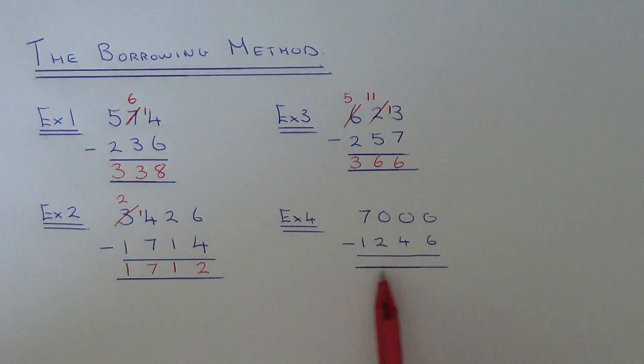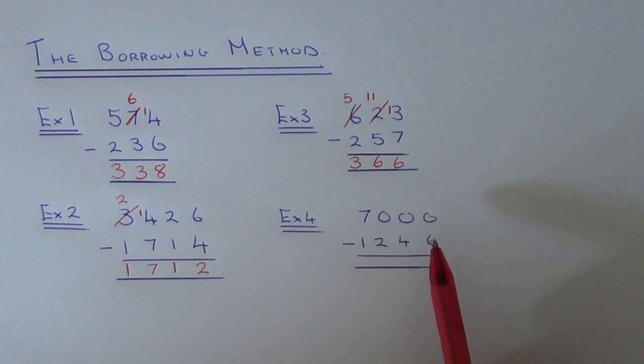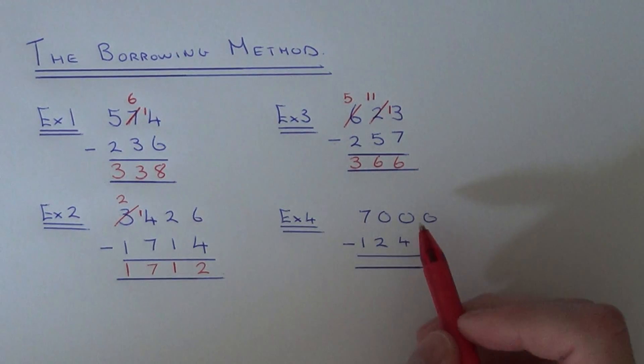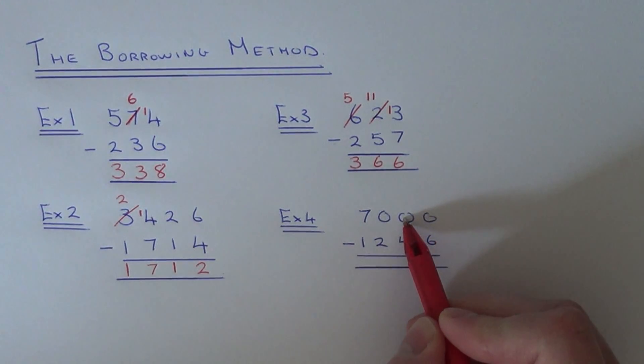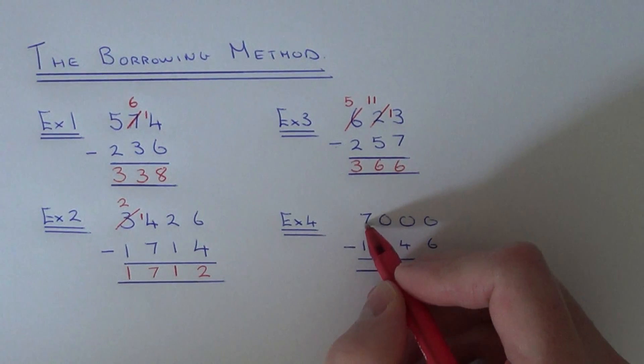We've got one last example to do now. This one is probably the hardest example. When you have zeros there, you know the question is going to be a lot harder. Start on the right hand side: 0 take away 6—we can't do. We can't borrow anything off here, we can't borrow anything here, so we have to go all the way to the end to borrow something.